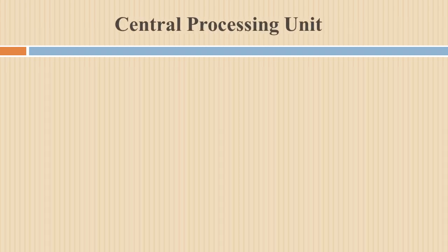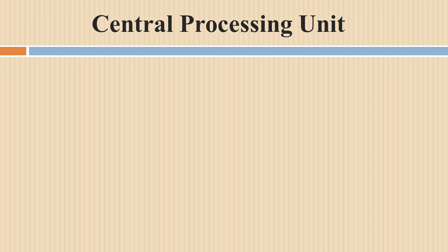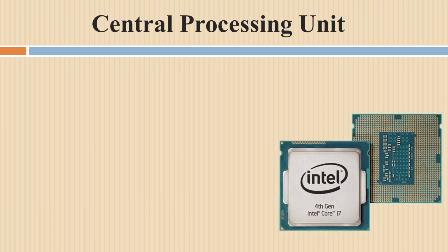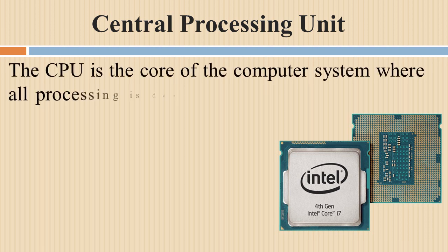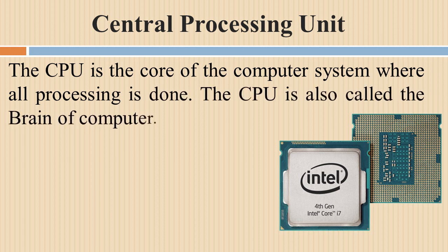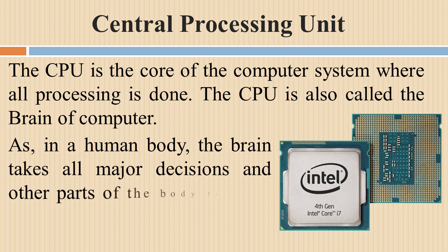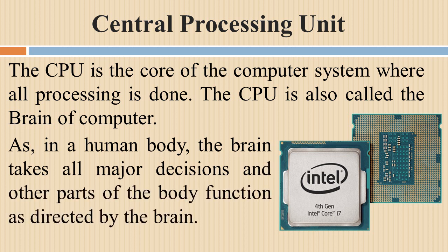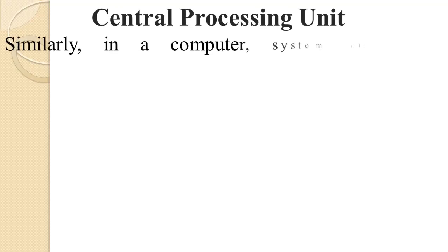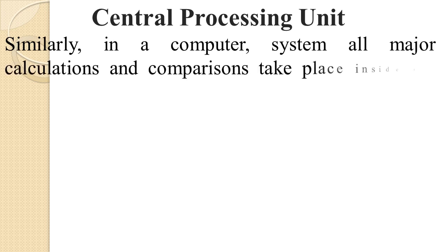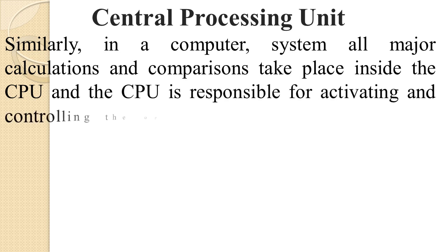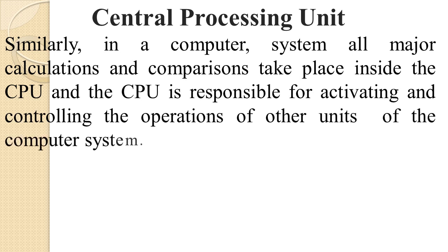Now we will discuss about CPU — Central Processing Unit. The CPU is the core of the computer system where all processing is done, and it is also called the brain of the computer. Just as in a human body the brain takes all major decisions and other parts function as directed by the brain, similarly in a computer system all major calculations and comparisons take place inside the CPU. The CPU is responsible for activating and controlling the operations of the other units of the computer system.